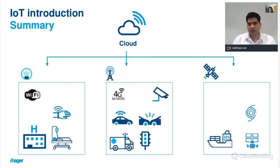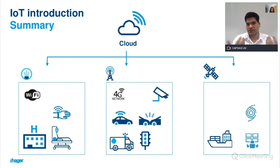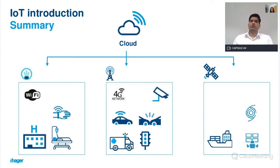Different IoT applications use different communication networks. Healthcare applications may have sensors and gateways communicating through Wi-Fi and transmitting to the cloud through a fiber optic network. Vehicle connectivity applications use a 4G network — for example, if there is an accident, an ambulance can get information for an alternative route. In disaster control applications in the middle of the sea where transmission towers are not possible, sensors and gateways communicate to the cloud through satellite communication.